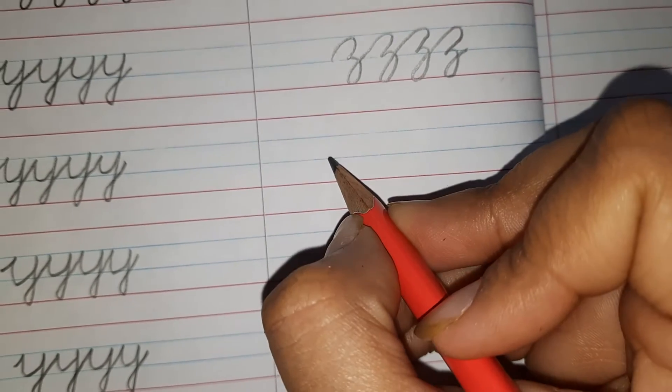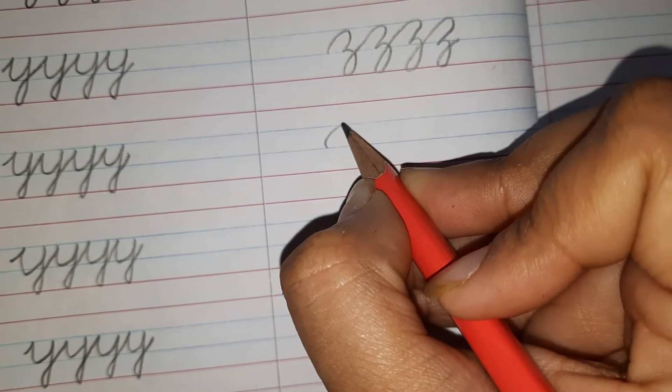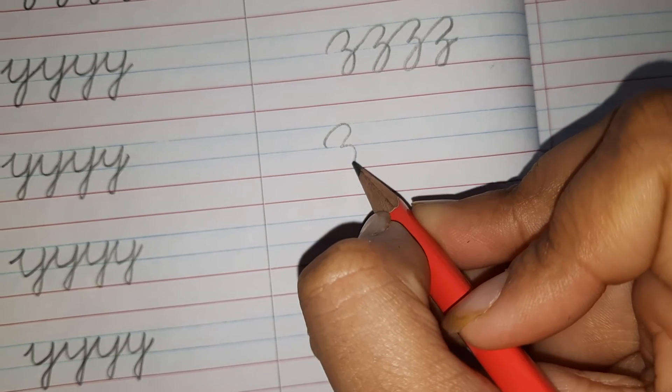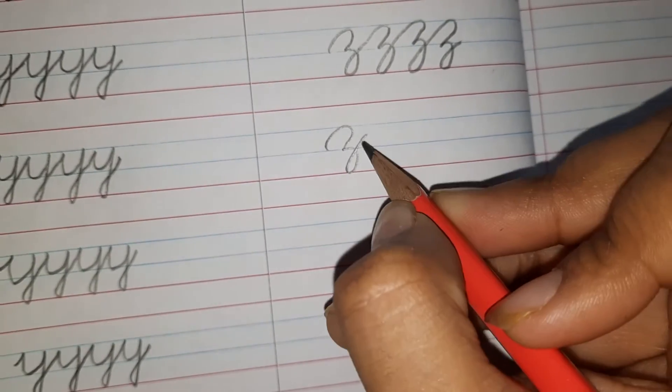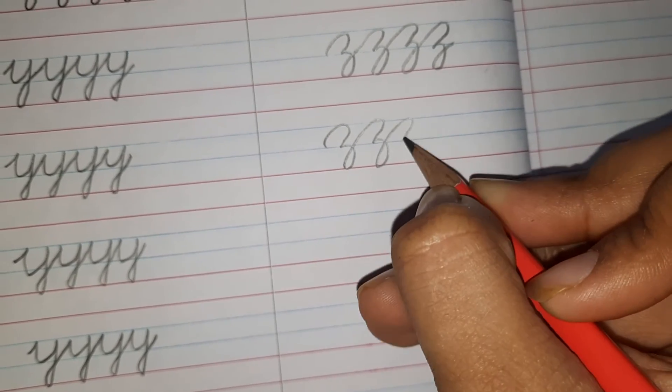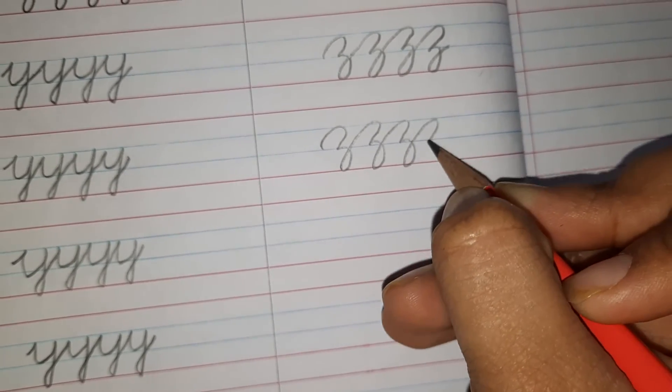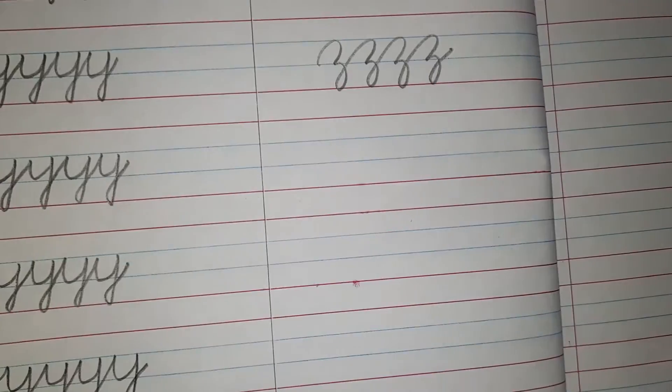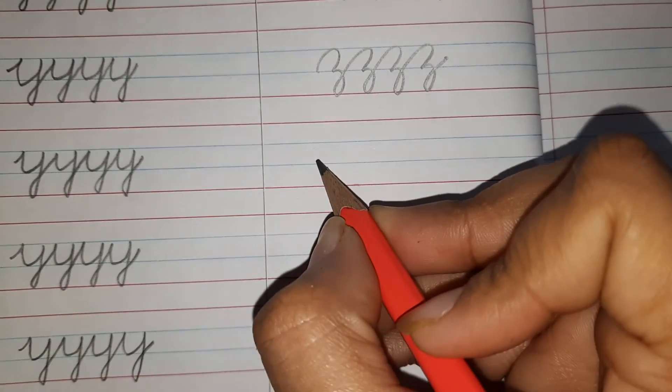First start with the first z. It starts with the blue line, touches the blue line up again, down, turn it round like this and up. And then you keep on joining it further. Okay? So this is how you are going to complete it.